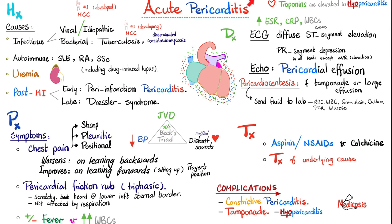Since this is an '-itis,' we can have fever, leukocytosis, and elevated ESR and CRP. As for cardiac troponins — if it's just pericarditis, cardiac troponins should be normal and CK-MB should be normal as well. However, if the myocardium is also involved — meaning myopericarditis — then cardiac troponins could be elevated in the serum.